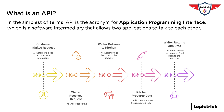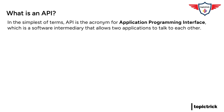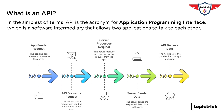I think I'm following. So I, the client, place my order. The waiter, the API, takes that order to the kitchen, the server, and then brings me back my food. Is that right? Exactly. The API acts as an intermediary facilitating communication between the client and the server. In the digital world, this food is data. So when I use my banking app to check my balance, the app is the client, my bank's server is the server, and the API is what allows them to exchange information about my account.